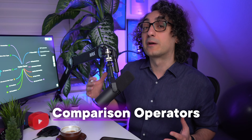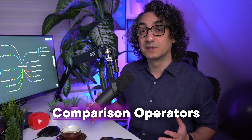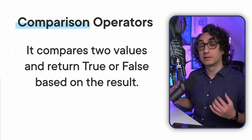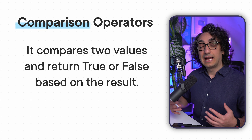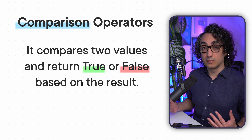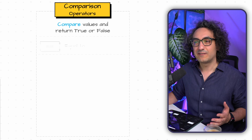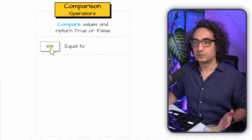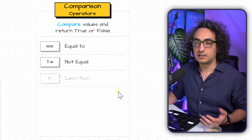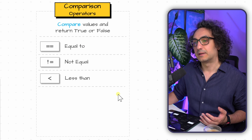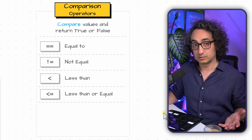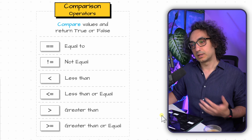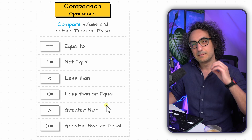Now we're going to talk about the comparison operators in Python. We use the comparison operators in order to compare two values and return true or false based on the results. We have many operators like equal to (two equals), not equal, less than, less than or equal, greater than, and greater than or equal.